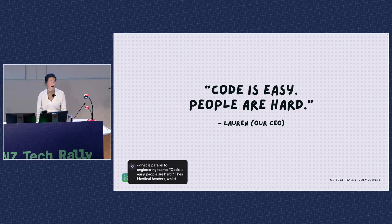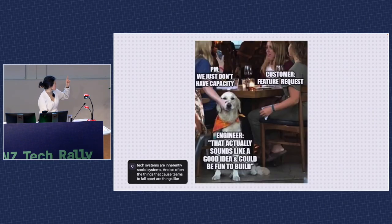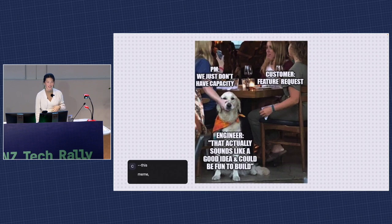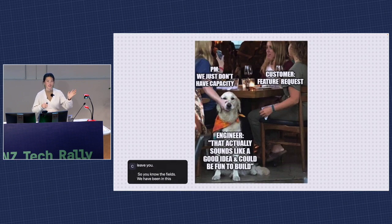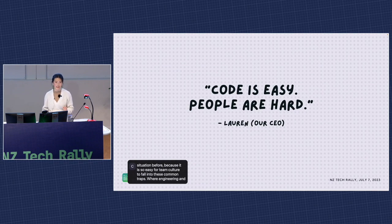The things that often cause a team to fall apart are restructures that take a while to ramp up from, personalities that haven't learned to work together yet, a lack of alignment on priorities — all people problems. We've all been in the situation before, because it is so easy for team culture to fall into common traps, like engineering and product feeling at odds, not being aligned on priorities, goals and stakeholders not being clearly communicated or understood. These are all people things, and culture is what drives that for better or worse.